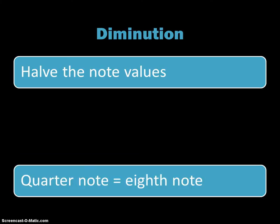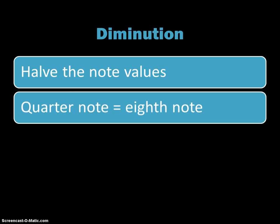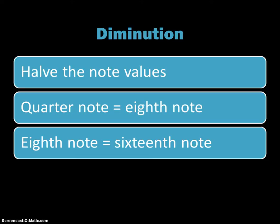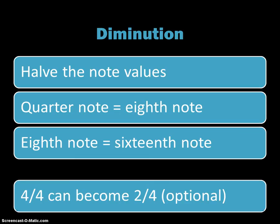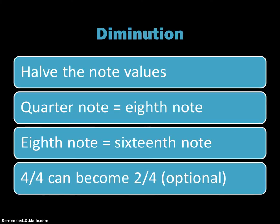Diminution is just the opposite. When we talk about that, we're going to be cutting each note value in half. So that means that a quarter note now will become an eighth note. An eighth note will become a sixteenth note, et cetera. And again, you can change the meter by cutting the meter in half.